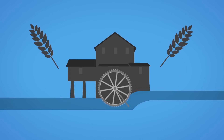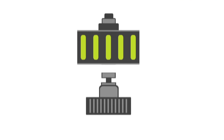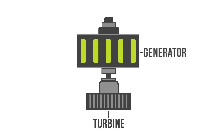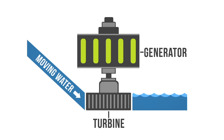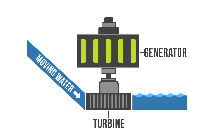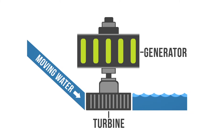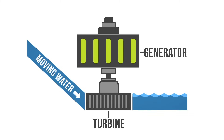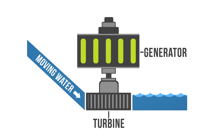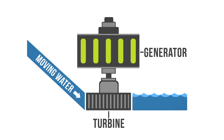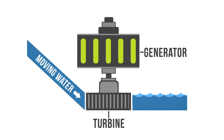But today, modern hydro plants produce electricity using turbines and generators. The mechanical energy created by moving water spins rotors on a turbine. This turbine is connected to an electromagnetic generator, which produces electricity when the turbine spins.